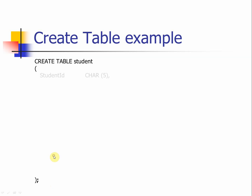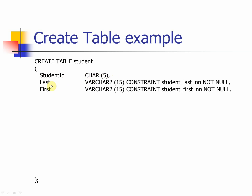Inside the parentheses you start defining the columns or attributes. The very first attribute we create is called student ID. This is going to be something we want to use as a primary key, and we define the data type — in this case CHAR — and we also need to provide the size of that data type. You end each column or attribute definition with a comma, indicating that is one attribute, providing the name, the data type, and the size.